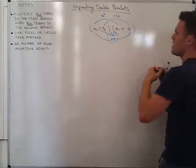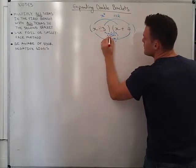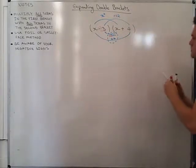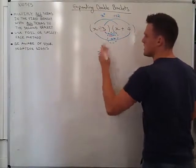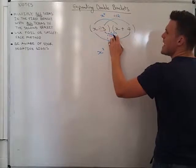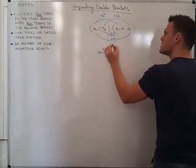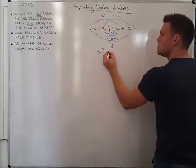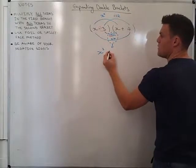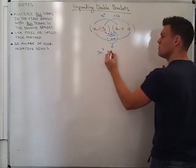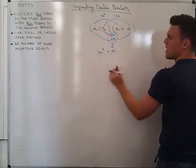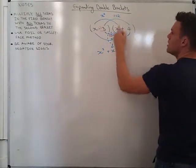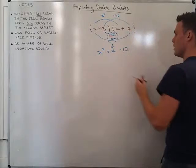Alright, so now I collect my like terms. And again, please make note, I have put in my negative there. Very, very important. Alright, so x squared, I can't collect anything else with that, that's just x squared. Negative 3x and 4x, well that actually gives me, well negative 3 add 4 is actually just 1. So we write that as, instead of 1x, we just write that as x. And of course it's positive. And lastly, my minus 12.